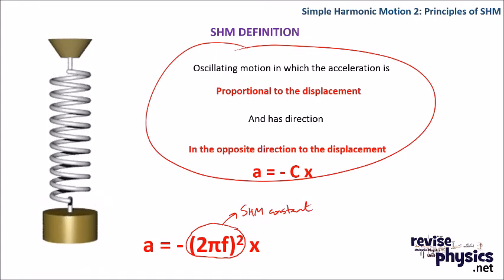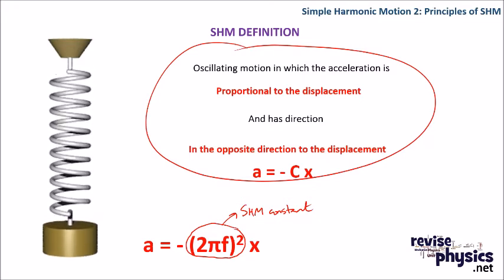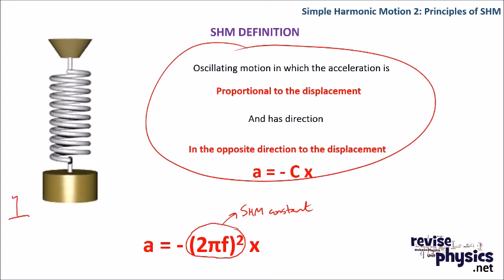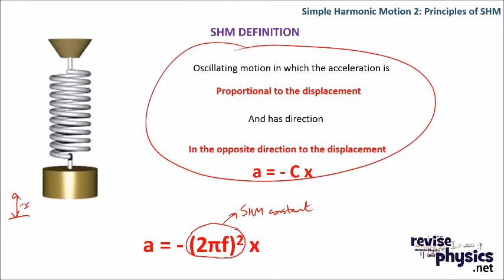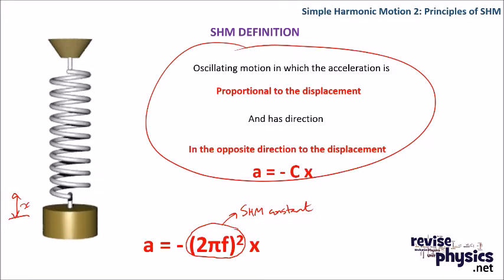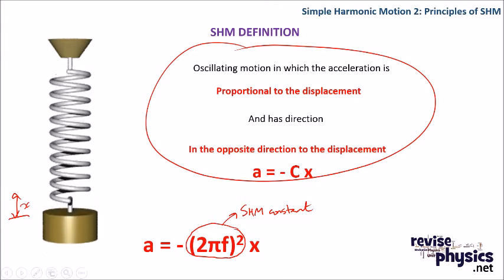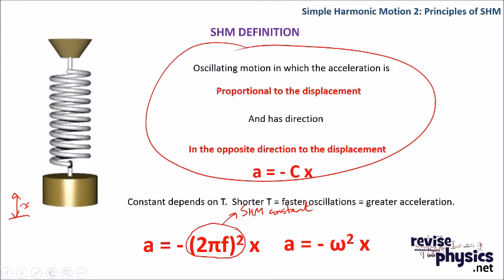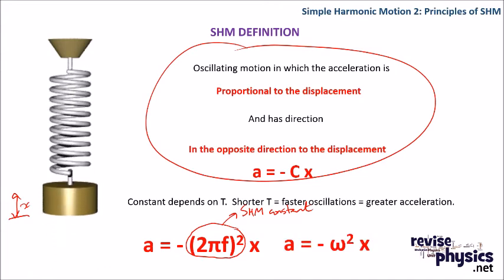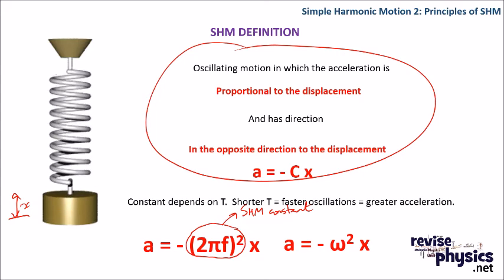So the acceleration of a mass at any point away from its equilibrium position will be equal to 2 pi times its frequency, which we can get from its time period, squared, times that extension. As a result, because 2 pi f is the same as our angular velocity, we can substitute in for this that acceleration is minus omega squared x.